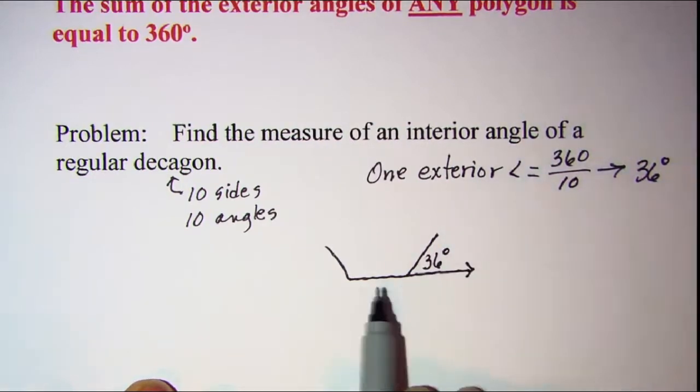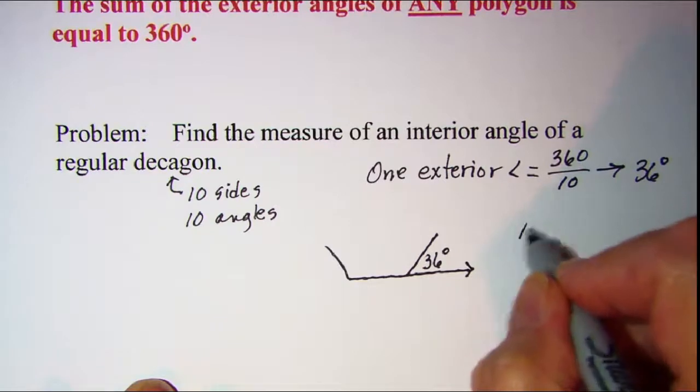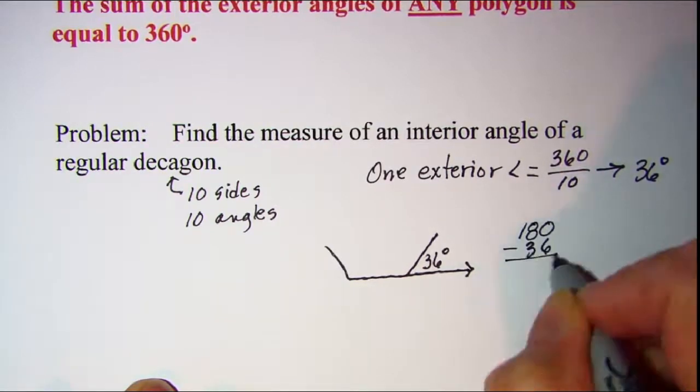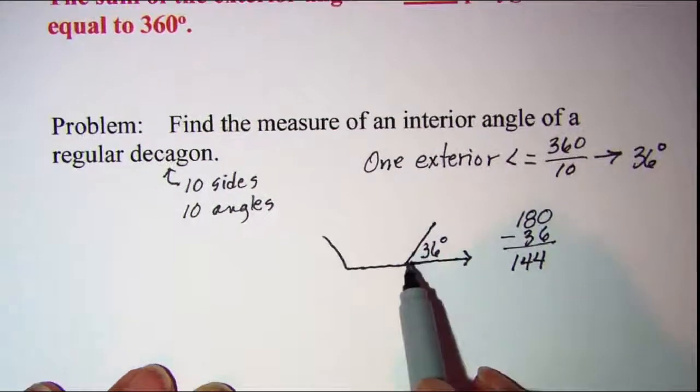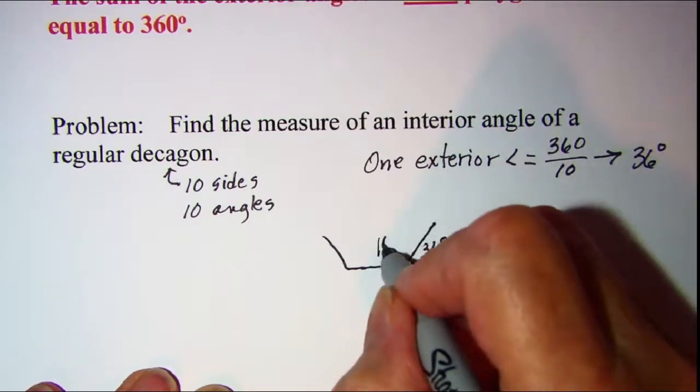Now since we have a straight angle here and our exterior angle is 36, then our interior angle can be found by subtracting 36 from 180. So 180 minus 36 is 144. So our interior angle then right here will be 144 degrees.